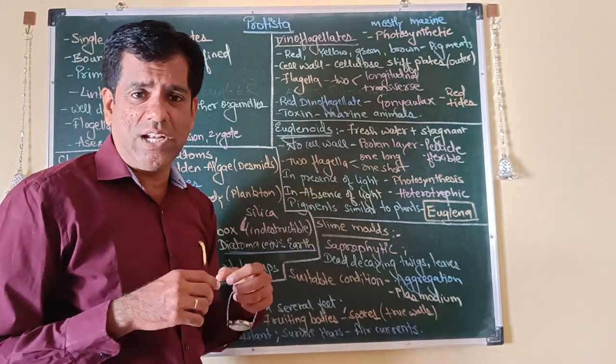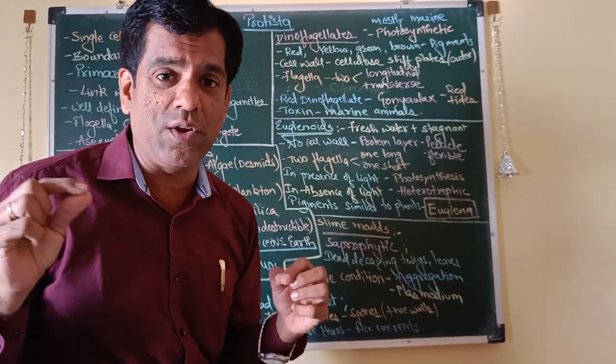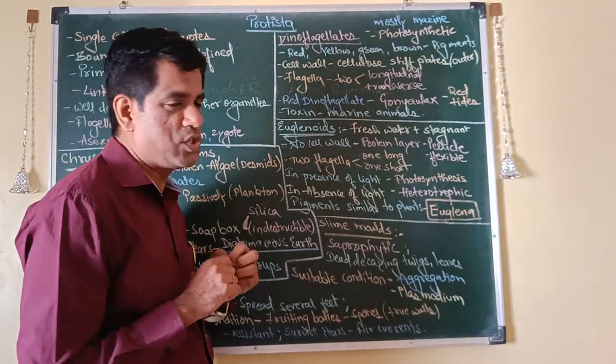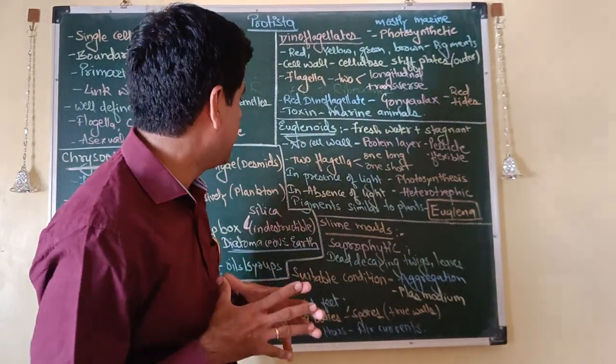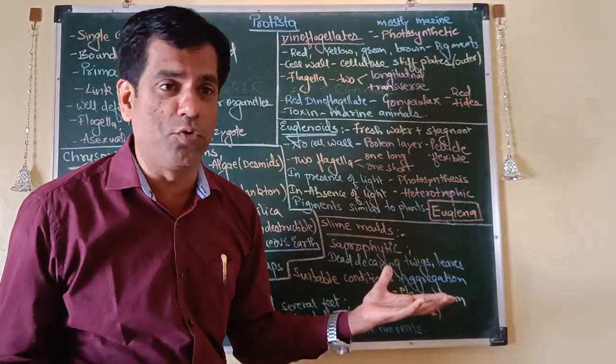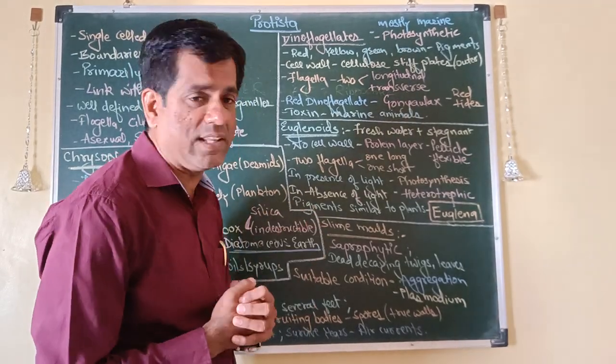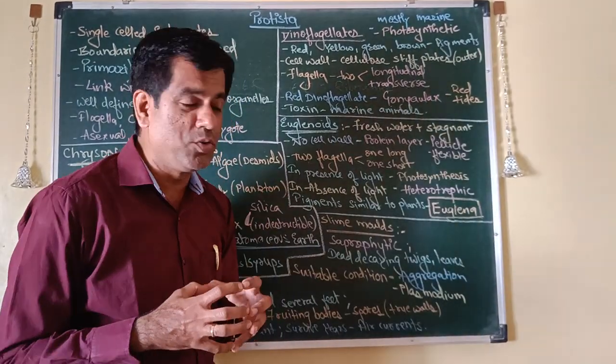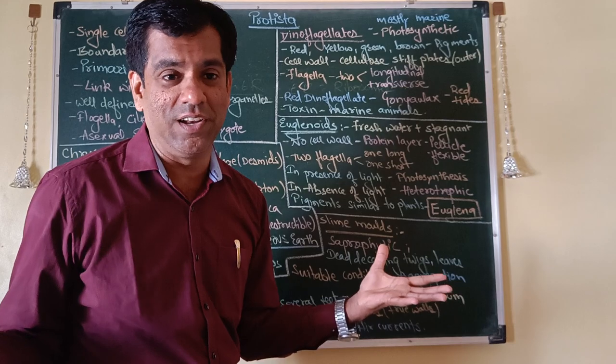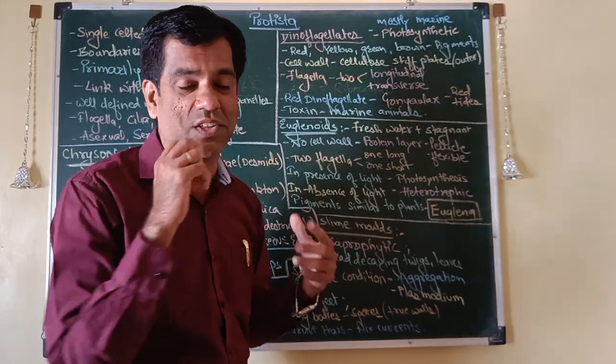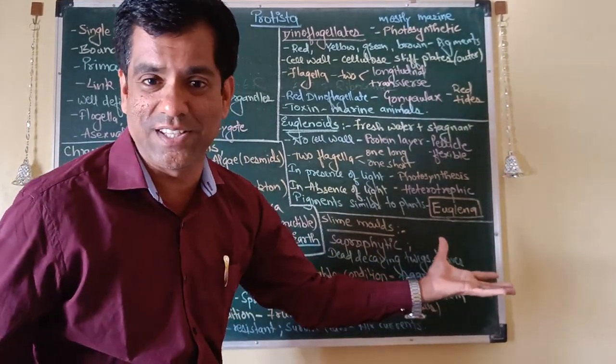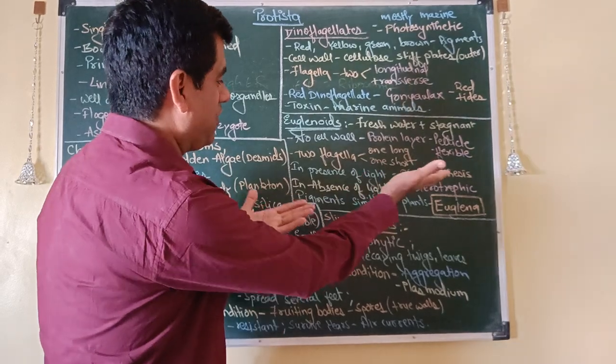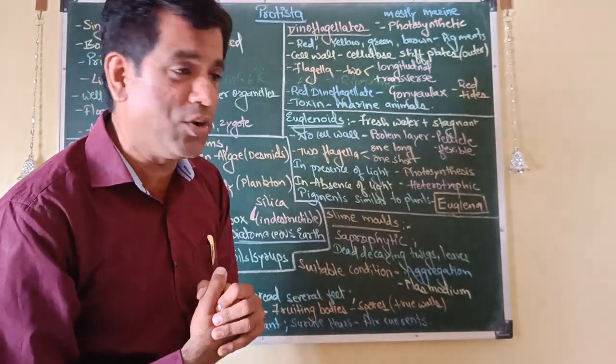They also have two flagella, one longer one and one shorter, dissimilar in size flagella. In the presence of light, they perform photosynthesis. In the absence of light, they are heterotrophic. If they wish, they'll prepare their own food if light is there. If there is no light, they can eat anything which they have. In presence of light, photosynthetic, and absence of light, they are heterotrophic.